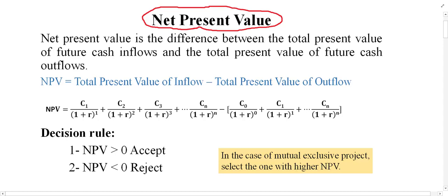First of all, let us have a simple definition for this technique and the formula, and then we'll have several examples in the coming videos. Net present value is the difference between the total present value of future cash inflow and the total present value of future cash outflow. In mathematical form, NPV equals the total present value of inflow minus the total present value of outflow.